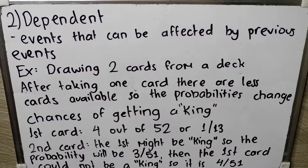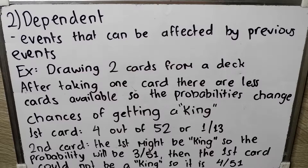So what is the second type of events? It is called dependent events. These are events that can be affected by previous events. For example, drawing two cards from a deck. After taking one card, there are less cards to pick from, so the probabilities change.